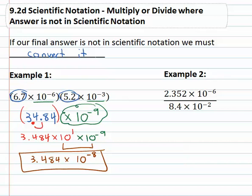Let's try a division example. In this division example, we have 2.352 times ten to the negative six, all over 8.4 times ten to the negative second.